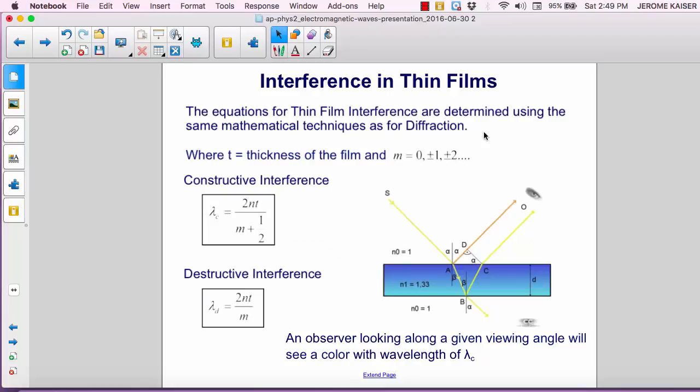The equations for thin film interference are determined using the same mathematical techniques as we did for diffraction from a two-slit experiment. Essentially what we're looking at is the path length difference for the two waves.